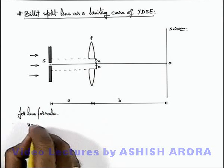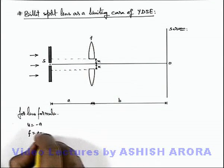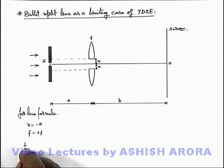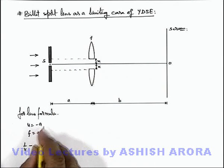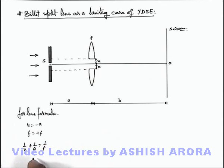Here we can write u is equal to minus a, and the focal length of the lens if it is given as plus f. We can use 1/v minus 1/u, that'll be plus 1/a, is equal to 1/f. On simplifying, we'll get the value of v. The numerical value of v we're getting is 1/f minus 1/a, so this'll be af by a minus f.